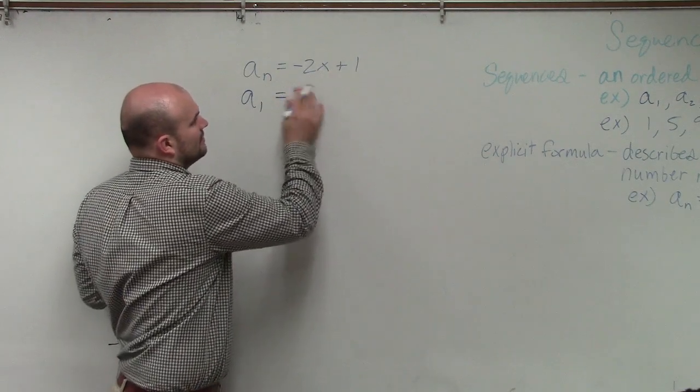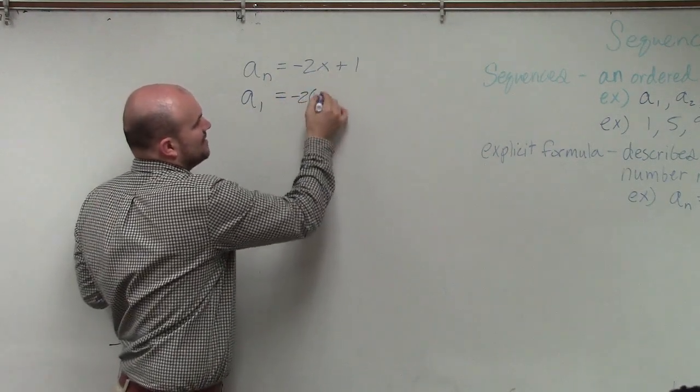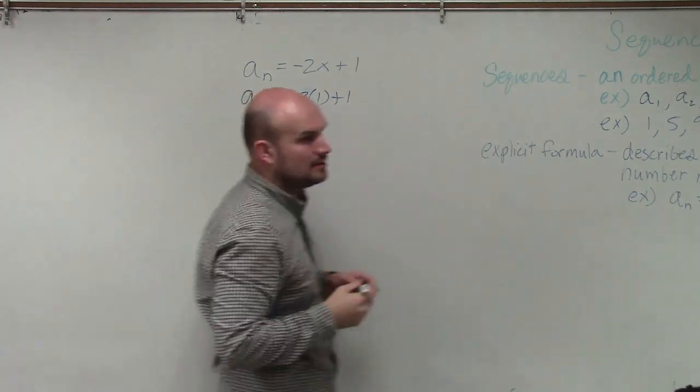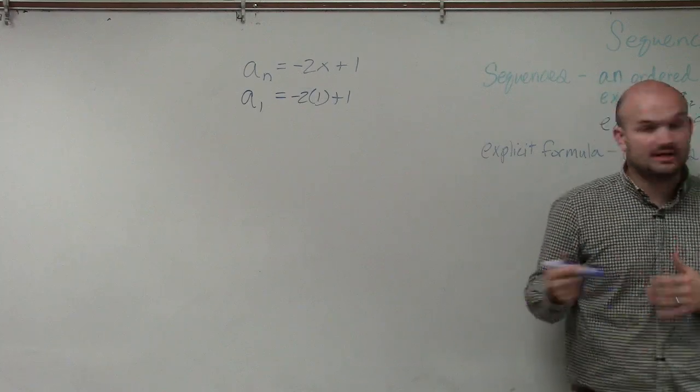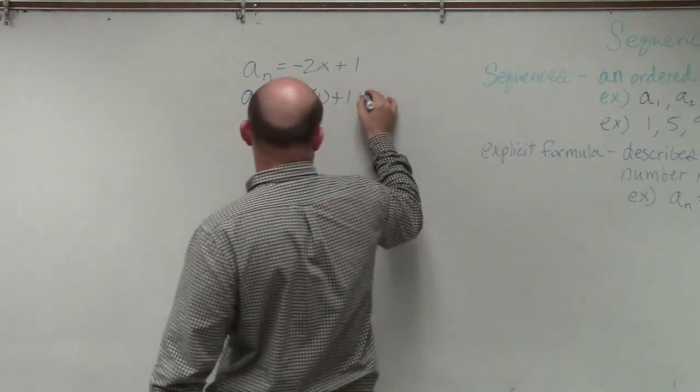So we have negative 2 times 1 plus 1. The first term of the sequence is negative 2 times 1, which is negative 2, plus 1, giving us negative 1.